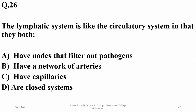The lymphatic system is like the circulatory system — are they both similar in that they both have nodes? No, nodes are only found in the lymphatic system. Do they both have a network of arteries? No, arteries are structural features of the circulatory system only. Are they both closed systems? No, the lymphatic system is not closed. So the right option is that both have capillaries.